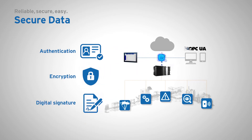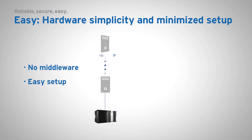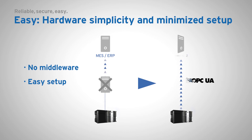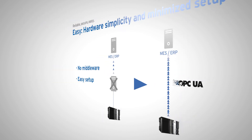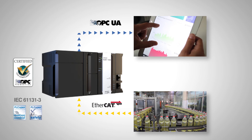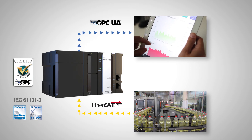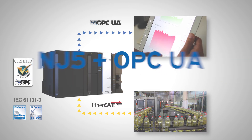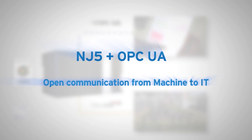authentication and encryption. OPC UA eliminates the need for hardware middleware by directly connecting the controller variables to the host system. It simplifies the complete setup. NJ5 with OPC UA enables open communication from machine to IT system.